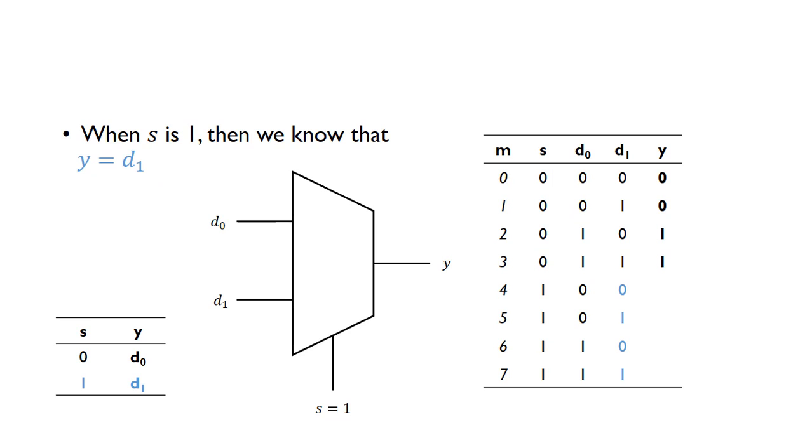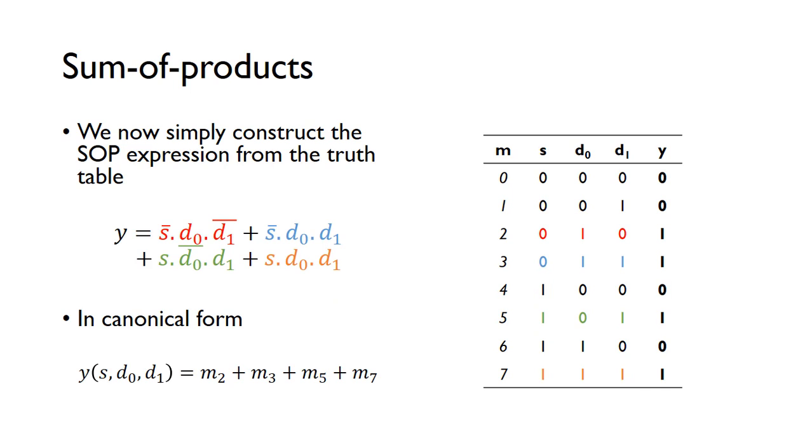For the case where s is 1, we know that y equals d1, so we just copy these values onto the output. When s is 1, d1 is connected to the output y, and now we've got our full truth table for the multiplexer.